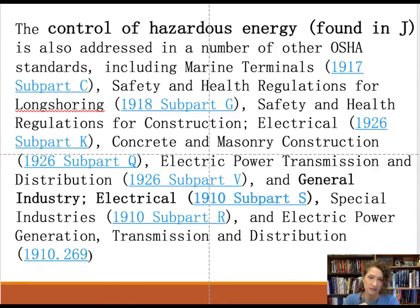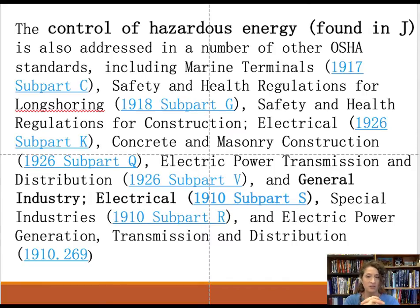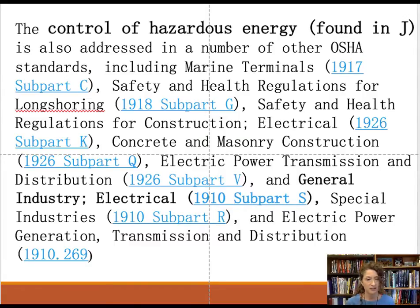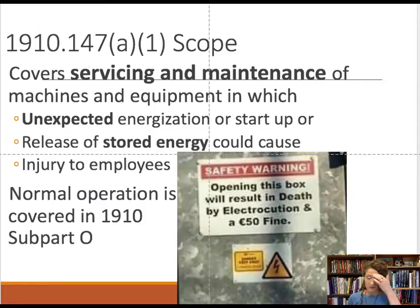The Control of Hazardous Energy is found under subpart J. There are also other applicable standards: construction follows 1926, maritime follows a separate standard, and different power systems may have their own parts. We will also discuss general industry subpart S and electrical system safety during this class. Lockout-tagout isolation of a system combines with standards like the confined space standard so that boxes are labeled appropriately and people know how to lock them out.